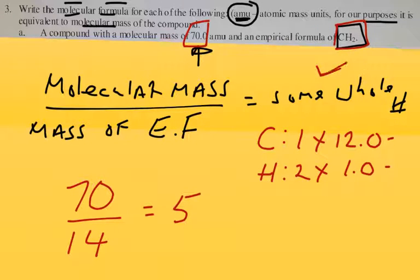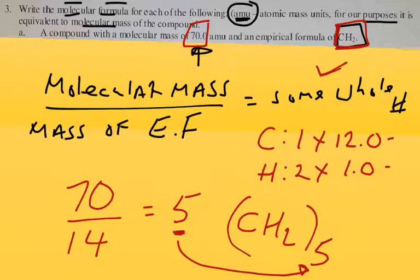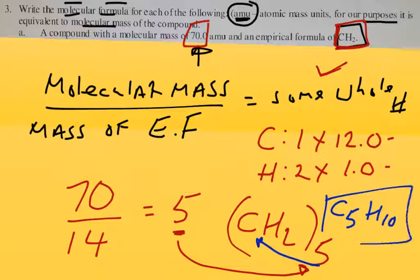Now, what we do with that whole number is we will multiply the subscripts of the empirical formula by this whole number. So we have our empirical formula right here, CH2. We will multiply the subscripts by 5. This 5 is this 5 over here. So our final answer will simply be C5H10. That will be our molecular formula, and you're done. You don't reduce it. This is C5H10. That's our molecular formula, and CH2 is our empirical formula.